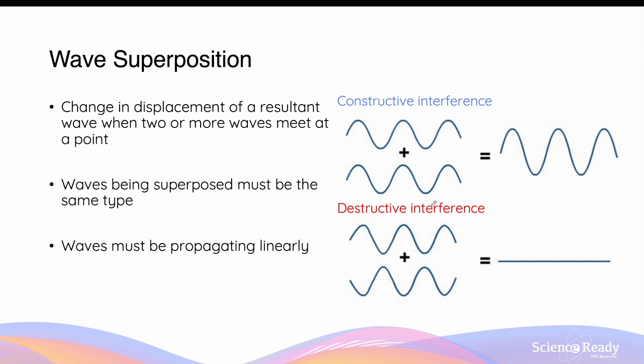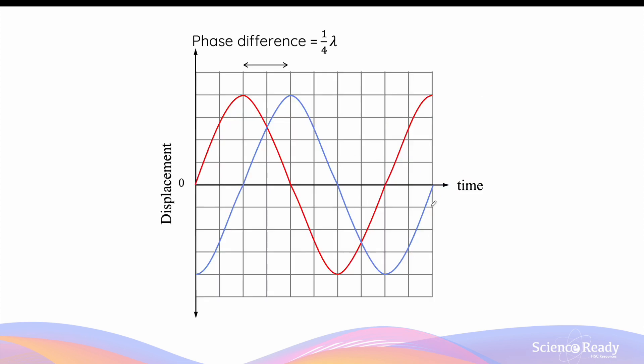Whether you get constructive or destructive interference really depends on the relative position between the waves that undergo wave superposition. This idea of the relative position between the two waves has a special term in physics — it's called the phase difference. On this diagram of displacement versus time, I am showing you the phase difference in time, where the red and blue wave have a phase difference of exactly one quarter of a wavelength, or a quarter lambda.